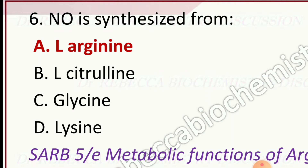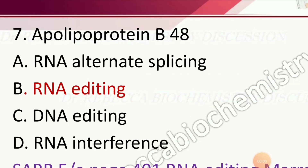Question 6: Nitric oxide (NO) is synthesized from — options are glycine, lysine, L-citrulline, and L-arginine. The correct answer is L-arginine.